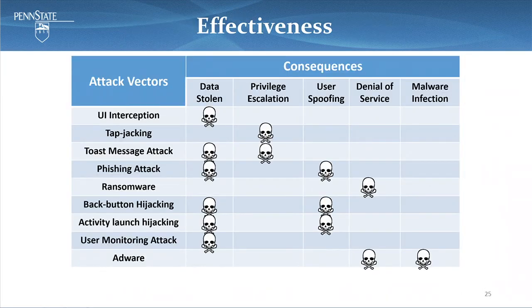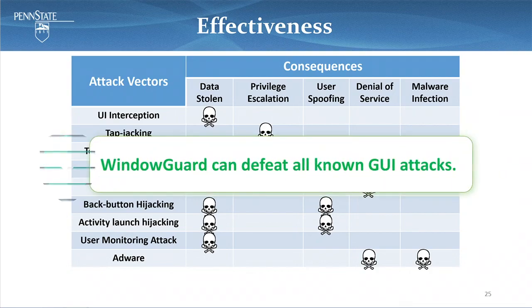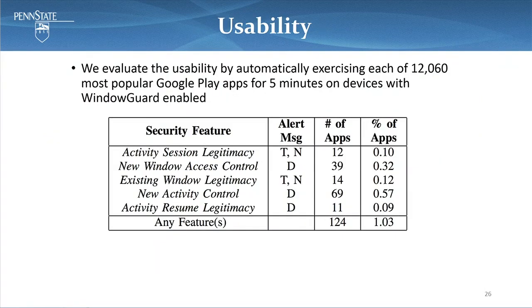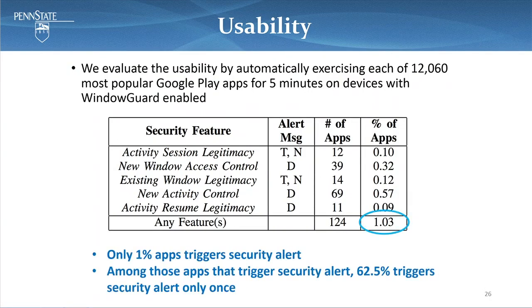To evaluate the effectiveness of WindowGuard, we collected attack samples of different attack vectors as shown in the first column, and the table shows the consequences of each attack. It turns out that WindowGuard can defeat all known GUI attacks. We also evaluated usability by automatically exercising each of the 12,000 most popular Google Play apps for five minutes on devices with WindowGuard enabled. The takeaway is that only 1% of apps trigger a security alert, assuming these apps are benign, and among those that do trigger alerts, most do so only once.